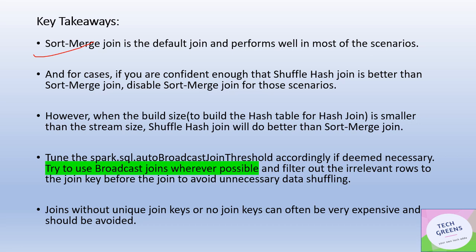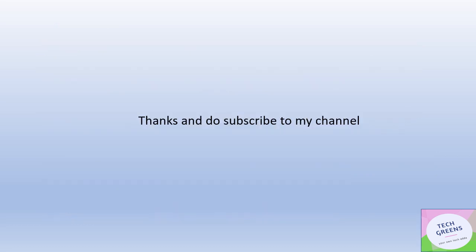The ideal scenario is to use broadcast join wherever possible. Before sending any dataset to a join, apply all your filters so that data reduction happens before the join. Joins are heavy operations, so sending a smaller dataset always results in better performance. Joins without unique keys or no keys can be very expensive as they result in cartesian cross joins and should be highly avoided. That's it for this video on Spark joins — thanks for listening, have a great day, and do subscribe to the channel!